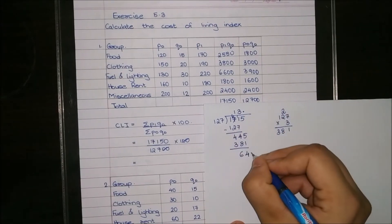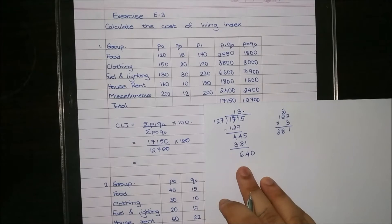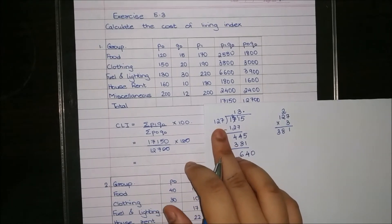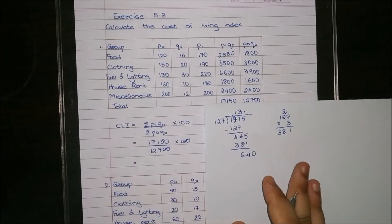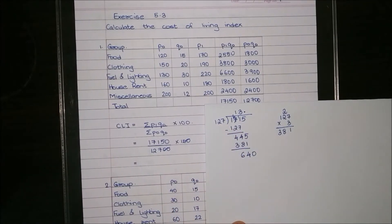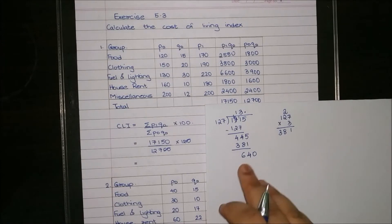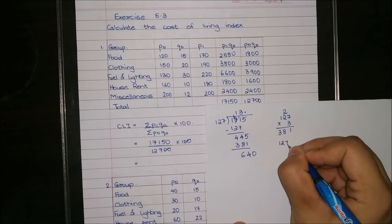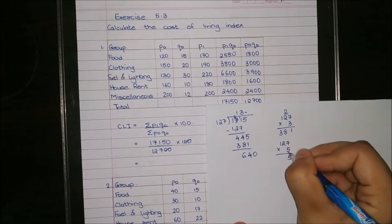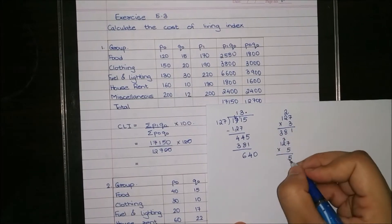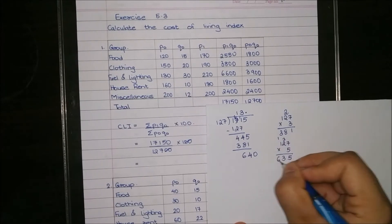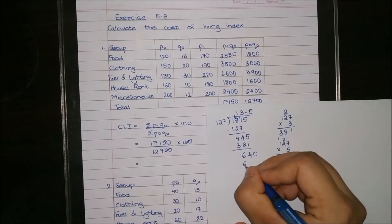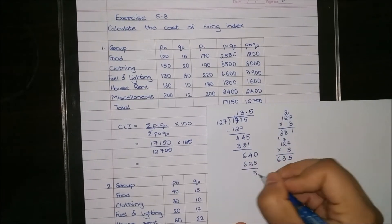On subtracting we get 64. Now I put a decimal and add a 0, giving us 640. Since 125 times 4 is 500 and 125 times 5 is 625, we try 127 into 5 which equals 635. The remainder is 5.